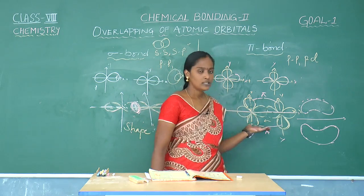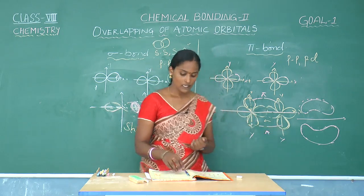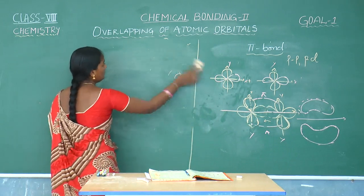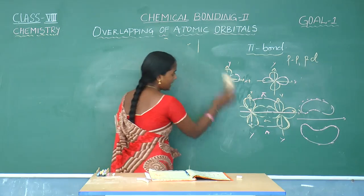Sigma bond is a strong bond, pi bond is a weak bond. In this, we are going to discuss some of the sigma and pi bonds formed between any two atoms.